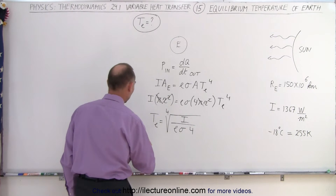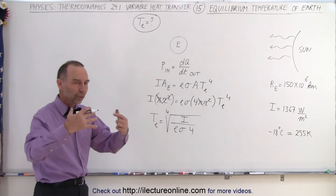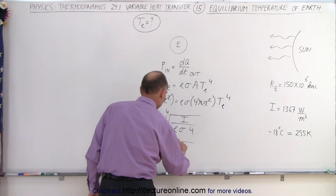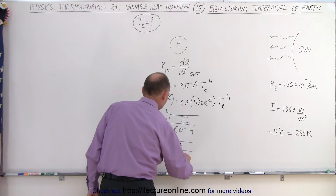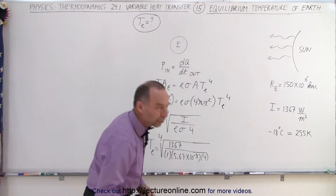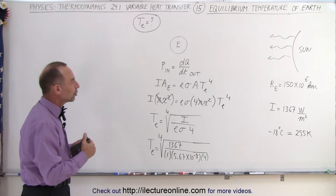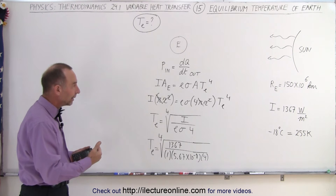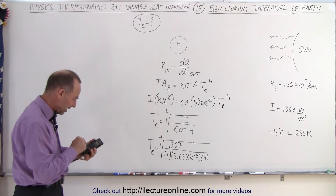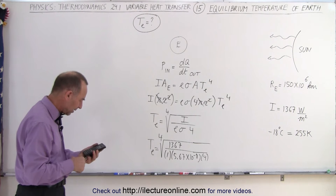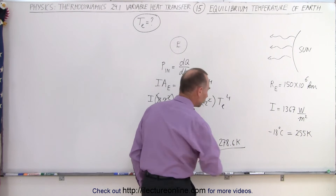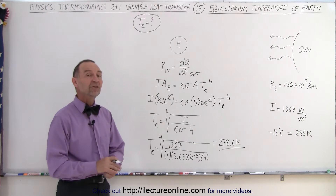Plugging in the numbers, assuming we receive and absorb all of the 1367 watts per square meter, the equilibrium temperature equals the fourth root of 1367 divided by 1, divided by 5.67 times 10 to the minus 8, divided by 4. We take 1367, divide by 5.67e-8, divide by 4, take the square root twice, and we get a temperature of about 278.6 kelvin.